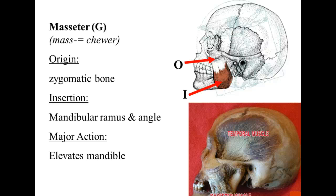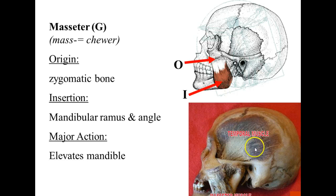That's the masseter here on the side of the jaw. You can definitely feel this one if you put your hands on the side of the mandible right where the ramus is and then clench your teeth — you'll be able to feel it underneath your fingers, and you can also see it contracting on other people when they're eating.